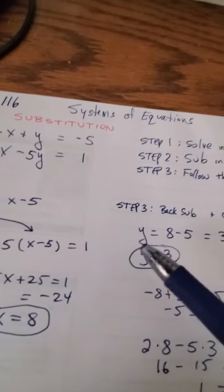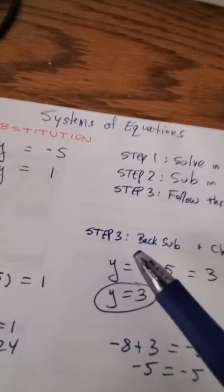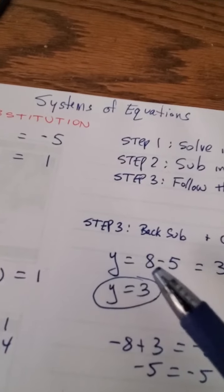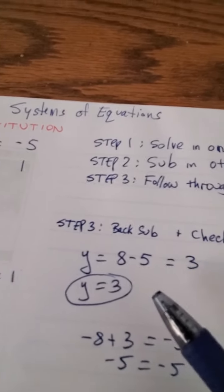The follow through means back sub and check. The hardest part is getting the first solution. Now I'm going to back substitute. Once I have x, y was equal to x minus five, so now y is equal to eight minus five, which is three. Y equals three.